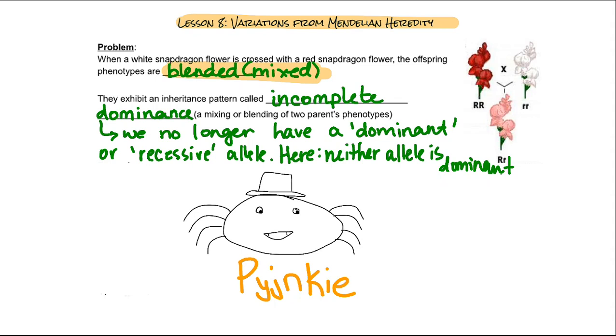Human beings exhibit something very similar with skin color. If you have a parent who is lighter skinned and a parent who is darker skinned, you will be somewhere in the middle of that color gradient. And it can vary. It's not quite cut and dry like this, but you'll find out in the next lesson how it kind of works. And that will allow you to kind of bridge the ideas from lesson eight to lesson nine.